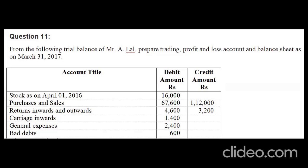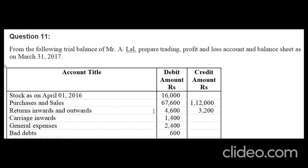Here is question number 11 of your NCERT textbook. The trading account, profit and loss account, and balance sheet are to be prepared. The given question consists of a trial balance. Opening stock: 16,000. Purchases: 67,600 on the debit side. Sales: 1,12,000 on the credit side. Returns inwards and returns outwards — that is, sales returns and purchase returns — are given.